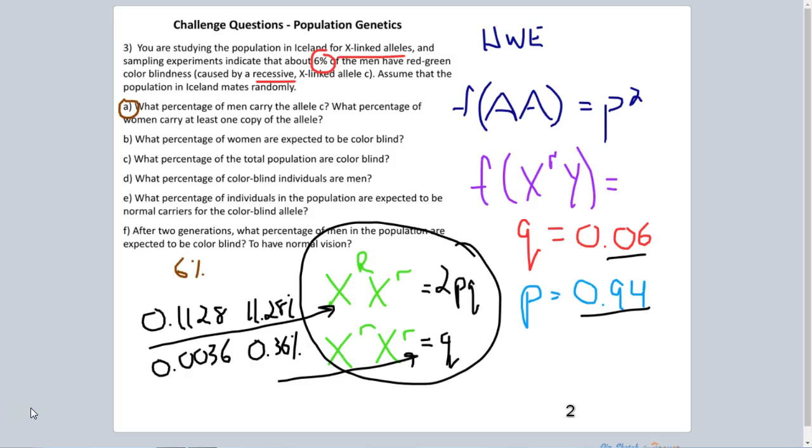Now, if we want the percentage of women who are carrying at least one recessive allele, then we need to take those two individual percentages, 11.28, and add them, 0.36, and we get a sum total answer of 11.64% of women are carrying at least one recessive allele.